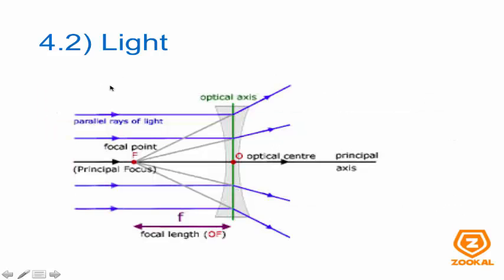This is a ray diagram for a diverging lens. Instead, your rays go out from the focal point and they do not converge anywhere.